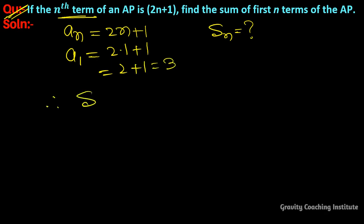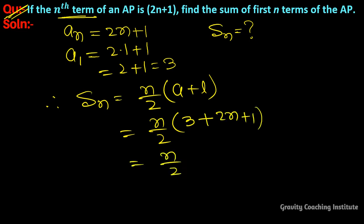Therefore, Sn equals n upon 2 into (a plus l). The first term is 3, which we call 'a'. And 'l' is the last term, which is 2n plus 1. So we get n by 2 into (3 plus 2n plus 1).